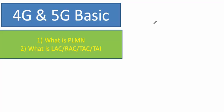Hi guys, today I am going to explain PLMN, LAC, DAG, and RAC. It will help to understand 4G and 5G. First of all, we should know the full form — PLMN stands for Public Land Mobile Network.